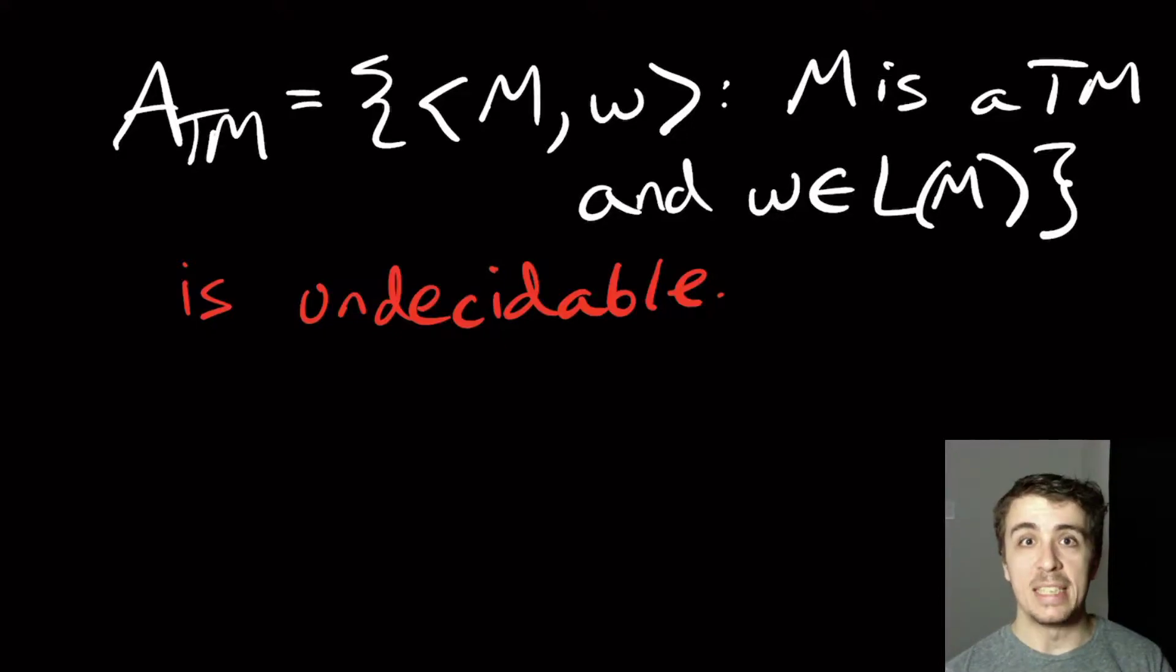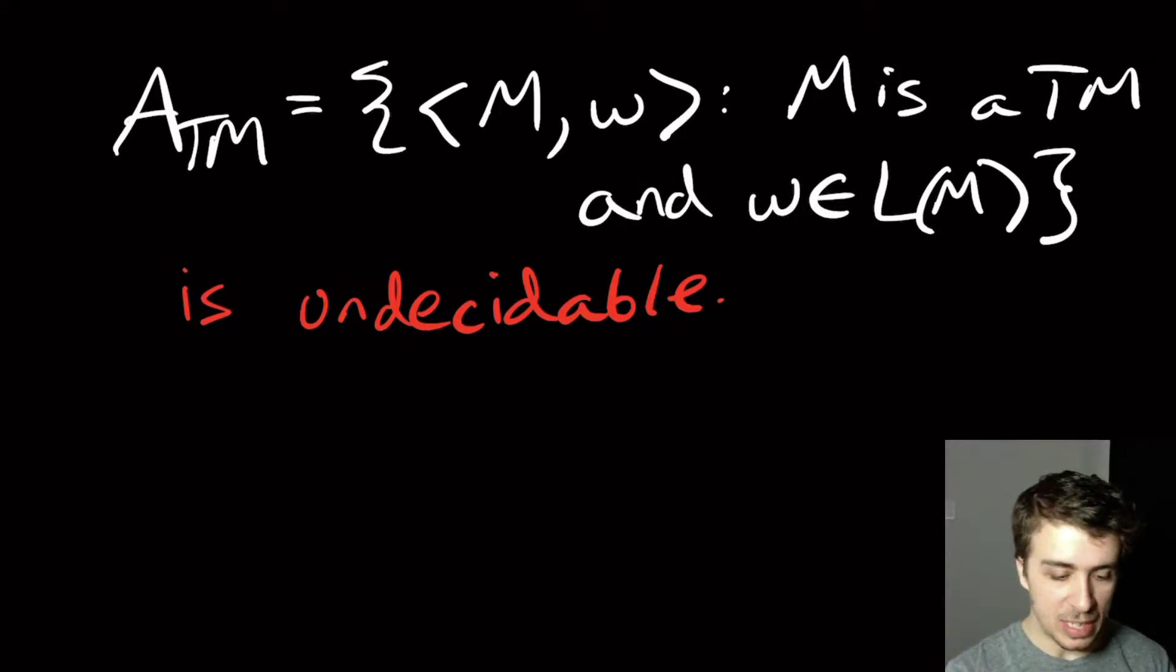Today we'll be proving that ATM, this problem right here, is undecidable. So the ATM problem says I'm going to be given a Turing machine M and an input W, and I want to figure out whether this input W is in the language of M.